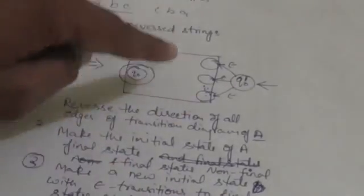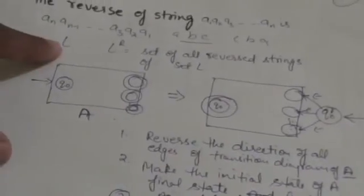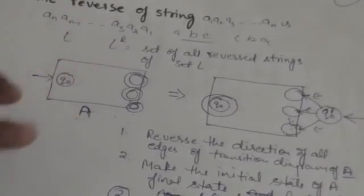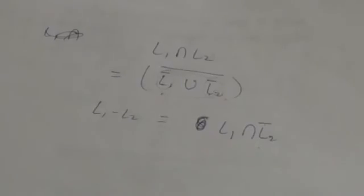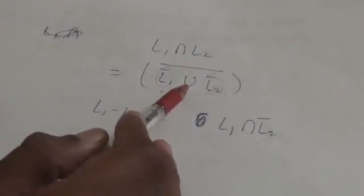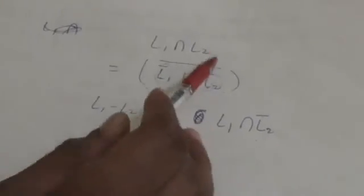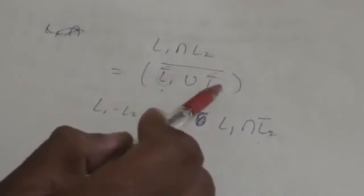If there is a string accepted by automata A, then the reverse of that string will be accepted by this new automata. So it means if L is a regular language, L^R will also be a regular language. Now, if L1 and L2 are two regular languages, then L1 intersection L2 will also be a regular language. By De Morgan's theorem, L1 intersection L2 is the complement of the union of L1 complement and L2 complement.